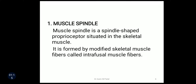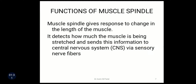The first one is muscle spindle. Muscle spindle is a spindle-shaped proprioceptor which is situated in the skeletal muscle. It is formed by modified skeletal muscle fibers called intrafusal muscle fibers. The function of this muscle spindle is that it gives a response to change in the length of the muscle. It detects how much the muscle is being stretched and sends this information to the central nervous system via sensory nerve fibers.